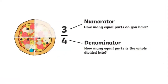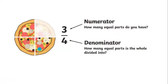Now the pizza is divided into four equal parts and I have taken my part — so how many pieces are left? Three parts. The total parts are four. The three is called the numerator and the four is called the denominator. How many parts are left is the numerator, and the total pieces is the denominator.